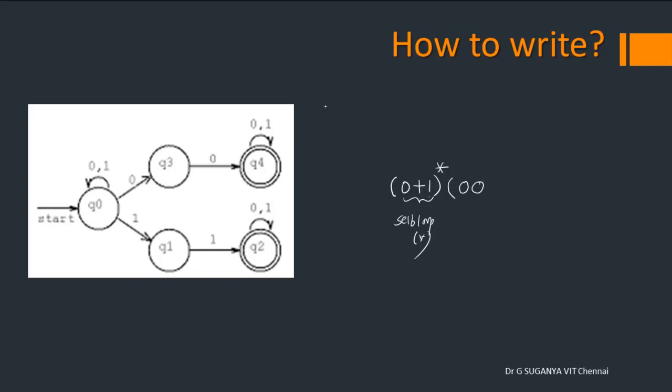again you have the possibility to repeat 0 or 1 any number of times. So, 0 or 1 the whole star. Okay, so this is one option from Q0, the state Q0. The stay at Q0. What is the other option that you have from Q0?